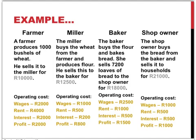In our example, we have a farmer that produces bushels of wheat. He doesn't use any intermediary inputs, but he does use the other factors of production. As you can see, his operating costs cover employing labor, capital, natural resources, and entrepreneurship. He sells his bushels of wheat to the miller for 10,000 rands. The miller then takes the wheat and produces flour. For the miller, the wheat is an intermediary input, but he also employs factors of production. He sells the flour to the baker for 12,500 rands. The baker then buys the flour and bakes bread, selling 7,200 loaves to the shop owner for a total of 18,000 rands.